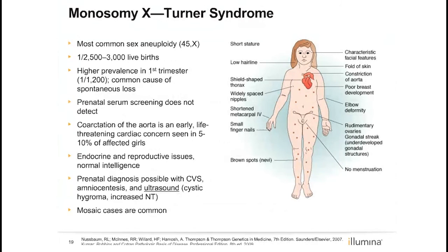Monosomy X is the most common of the sex chromosome abnormalities. In contrast to other sex chromosome abnormalities, one might see findings on ultrasound like a heart defect or increased nuchal translucency. Monosomy X has a high rate of spontaneous loss in pregnancy and is also known to be present in mosaic form. Early identification for management of endocrine problems is also important.